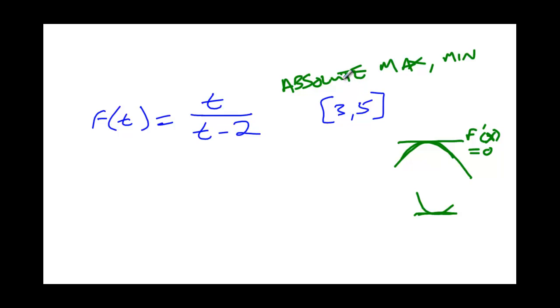Also, if I'm given an interval and I'm asked for the absolute max and min, the critical point could be the highest point between maybe 3 and 5 here. But also, the endpoints could be the maximum height. We're just trying to find where the highest y value is and the lowest y value is.